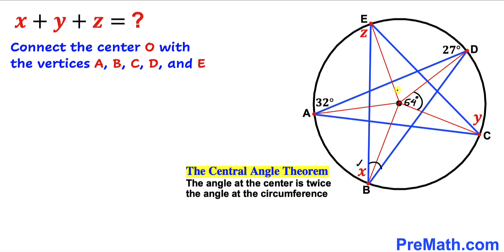Angle B is x at the circumference, so the angle at the center is going to be twice that, becoming 2x. Likewise, angle C is y at the circumference, and the corresponding angle at the center is going to be twice that, becoming 2y.